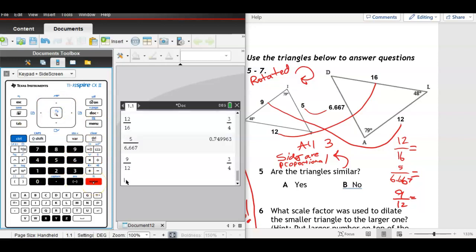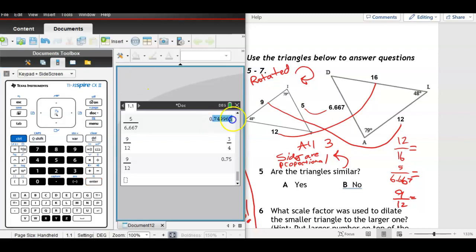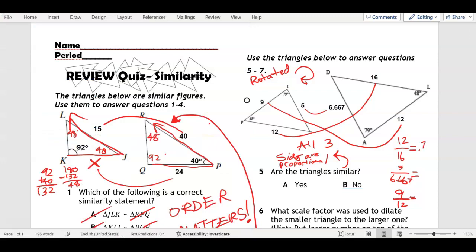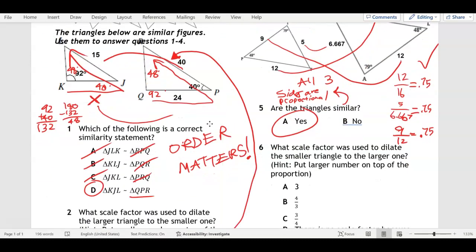Now this might not look like it's exactly all the same, but this 667 has been rounded, it goes on forever. Remember 3 over 4 is 0.75 and this rounds to 0.75. So 0.75, 0.75, 0.75. All three of these actually are the same, so yes they are similar.